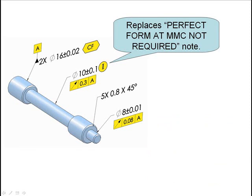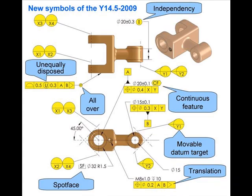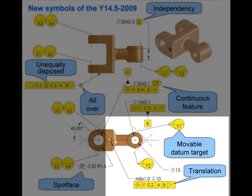We've got the new symbol translation modifier, which allows you to shift the datum feature simulator into place, and movable datum targets. These are important for industry because it reflects their actual practices, and there hasn't been a way to do this previously. So it reflects, again, real technology, the way that the world is working, the way manufacturing is working. So it's kind of catching up with the standard.